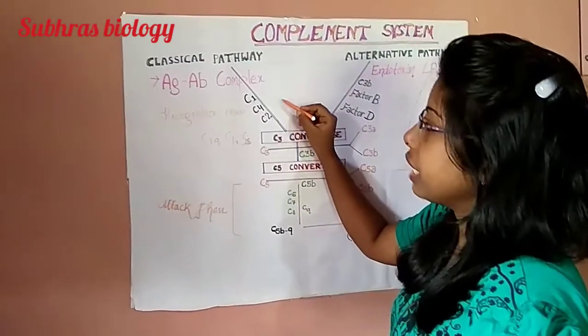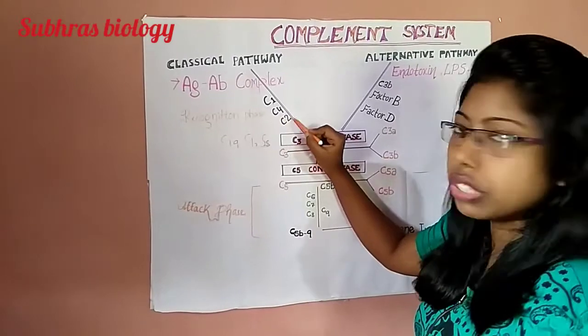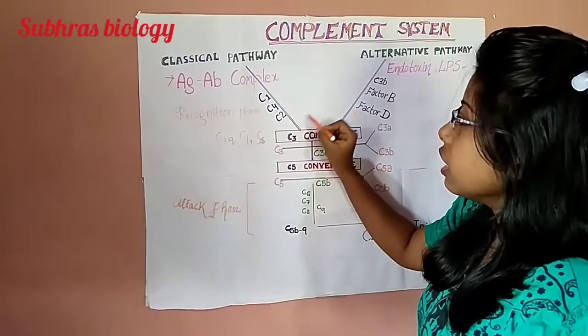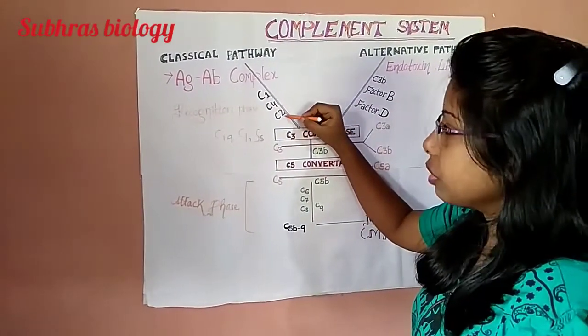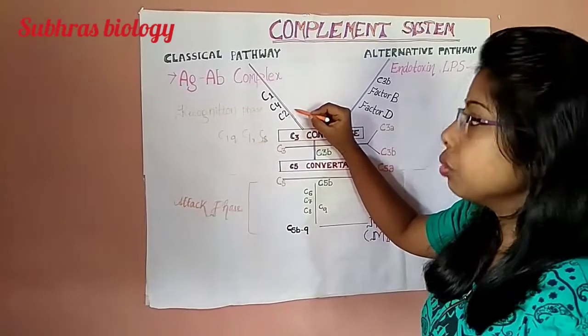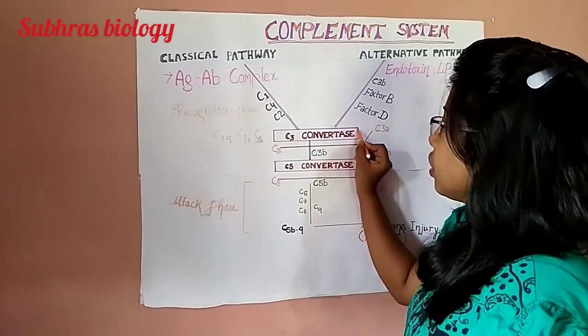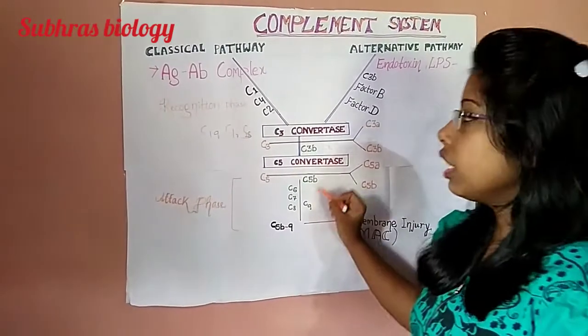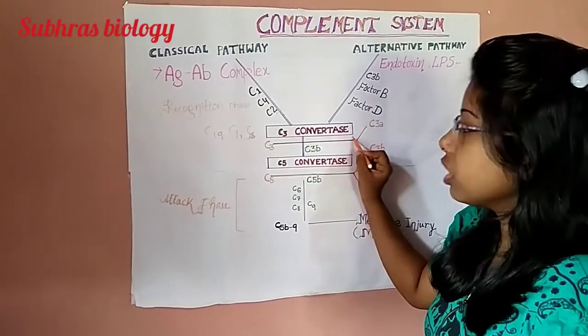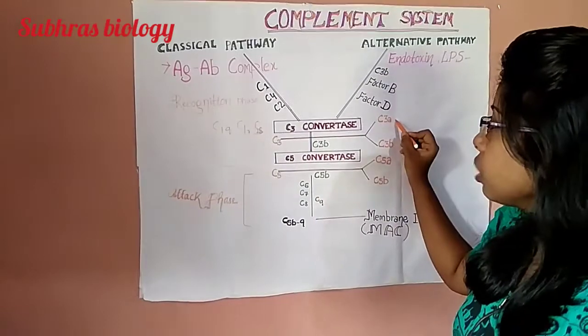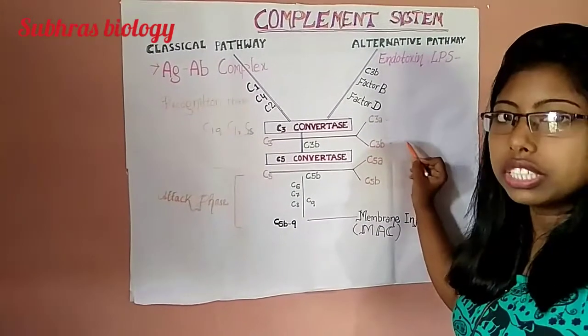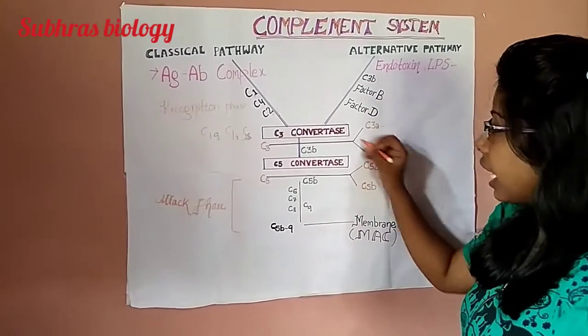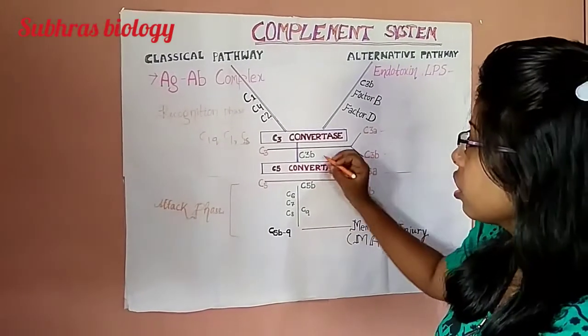Next, C4B activates C2. When C4B attaches with C2 or activates complement 2, it forms C3 Convertase. C3 Convertase, the name suggests C3 is split into C3A and C3B, in which C3B joins the complex. This reaction repeatedly functions.